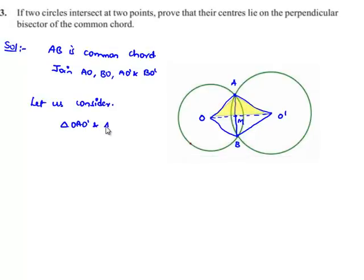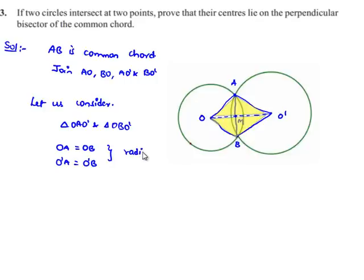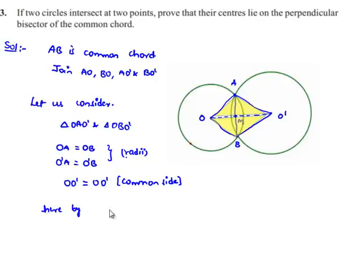Let us consider triangle OAO' and triangle OBO'. In these two triangles, OA is equal to OB since they are the radii of the circle with center O. O'A is equal to O'B since they are the radii of the circle with center O'. And OO' is equal to OO', which is the common side for both triangles. Therefore, by the SSS property of congruency, we can say both triangles are congruent.